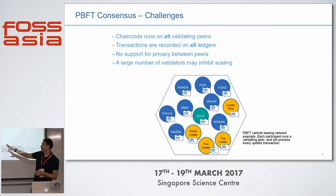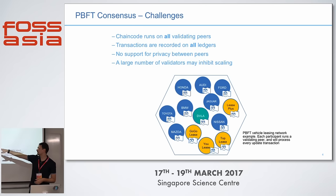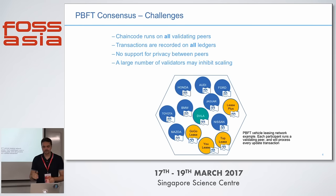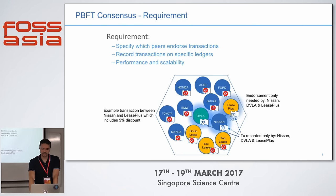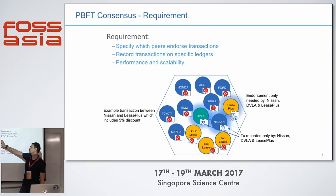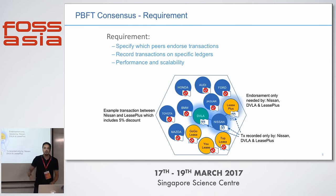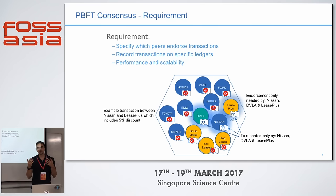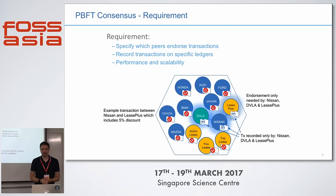For example, there is a network of car manufacturers and lease companies. Car manufacturers are blue, lease companies are yellow, and there is a regulator in the center. They want to perform a transaction. Let's say there is a Nissan who wants to sell a car to Lease Plus with a 5% discount. In the current implementation in version 0.6, this transaction will be visible to all the validating peers running on all the data centers of all these companies. That's definitely what we don't want — we don't want everybody to see what exactly was the discount that Nissan gives to Lease Plus.